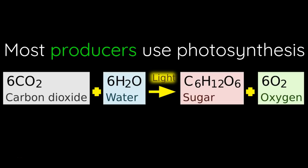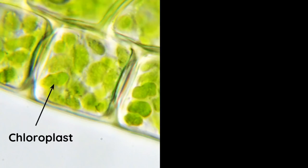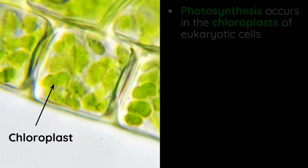Most producers use photosynthesis. We have carbon dioxide plus water, and they use light to break down that carbon dioxide and water, and then they're going to turn that into sugar and oxygen. The really important organelle we've talked about is the chloroplast — that's found in plant cells, and that's where the magic of photosynthesis is happening.